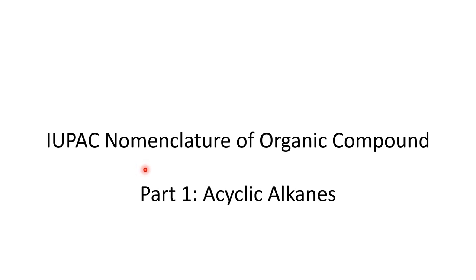Assalamu alaikum, my dear students. This is part 1 of IUPAC nomenclature of organic compounds, in which I will be telling you how to name acyclic alkanes according to the new IUPAC rules. Acyclic alkanes are saturated organic compounds that do not have any rings or any other functional groups in them. So let's begin.